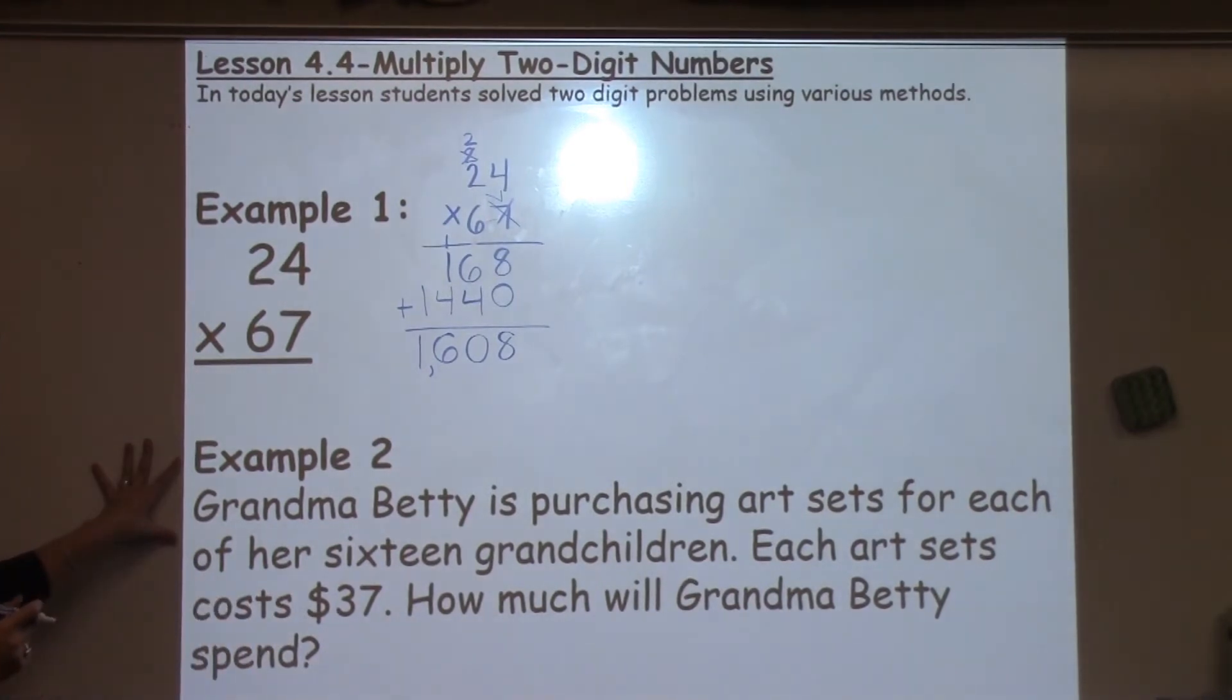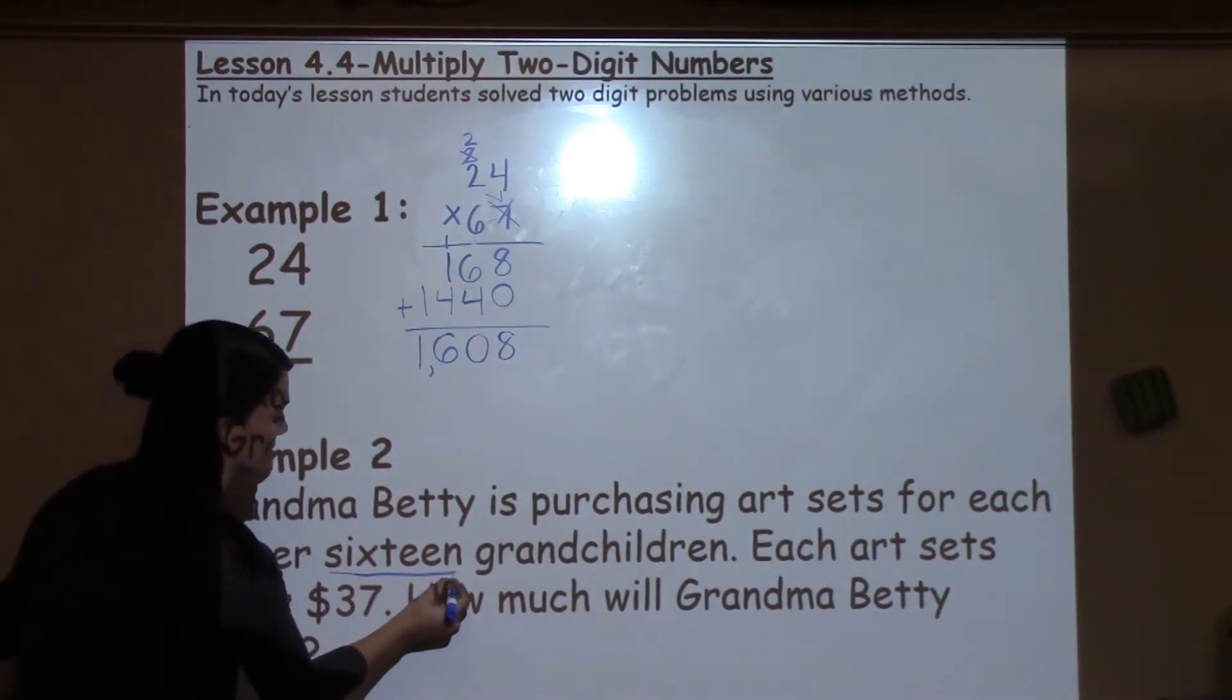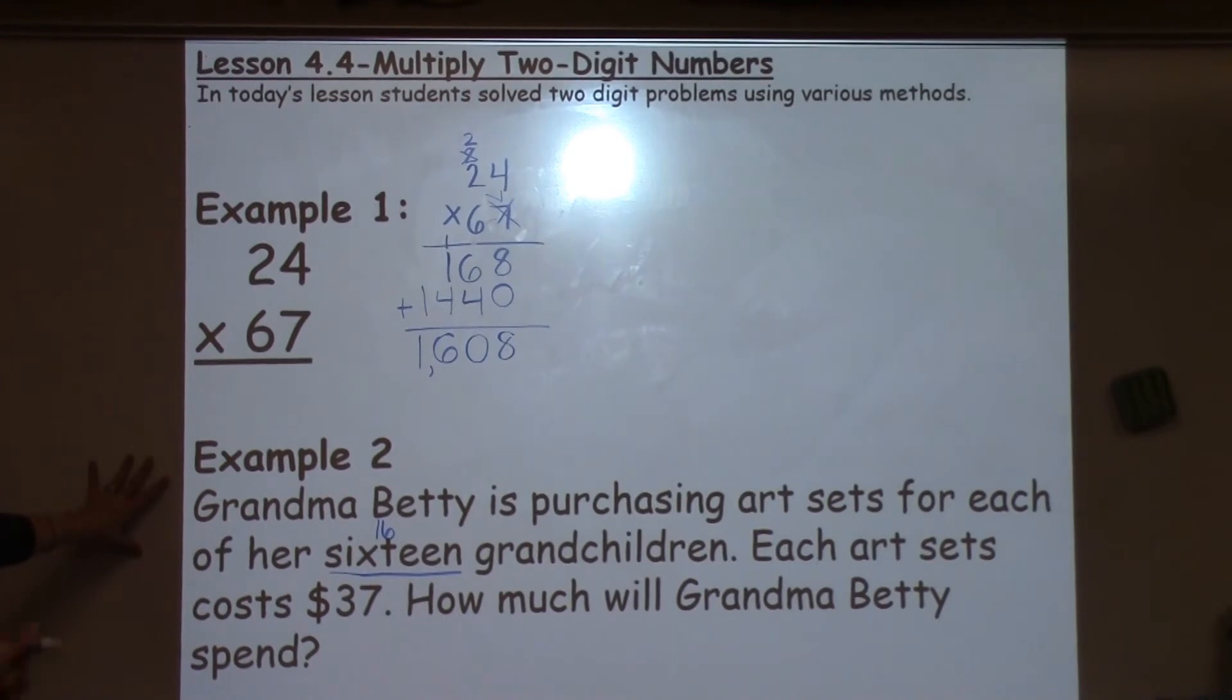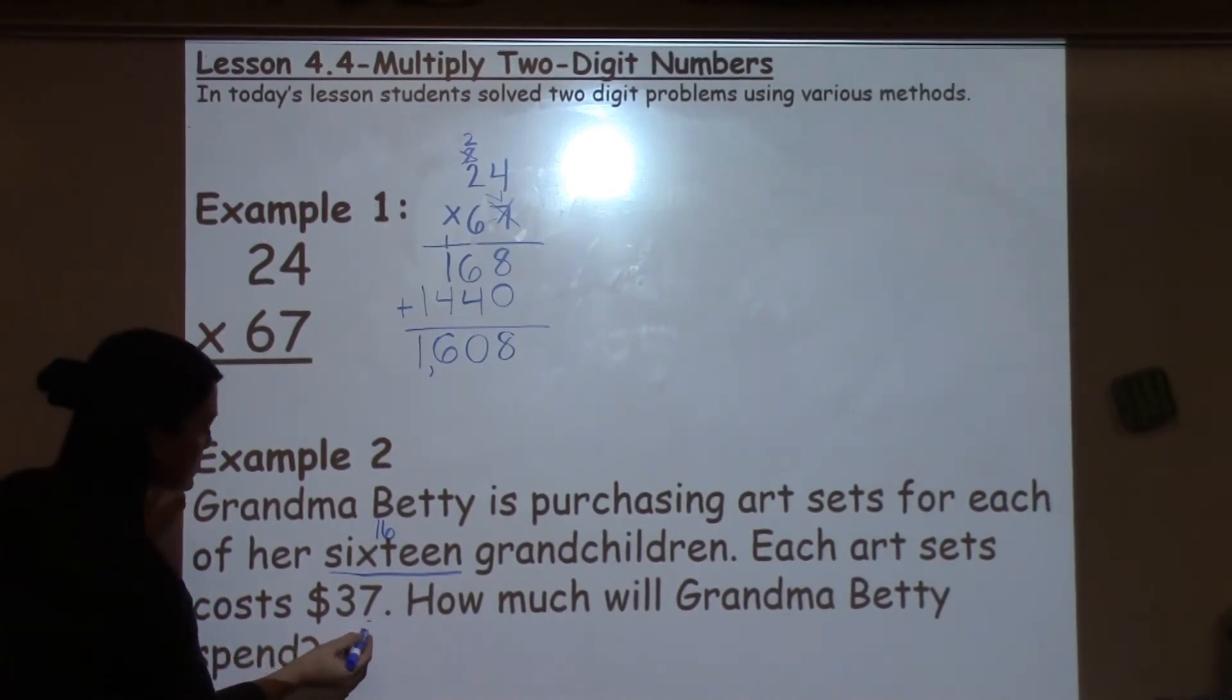Let's look at example 2. It says, Grandma Betty is purchasing art sets for each of her 16 grandchildren. So we've got 16 grandchildren there. Each art set costs $37. How much will Grandma Betty spend?